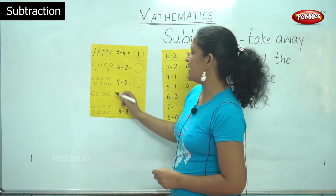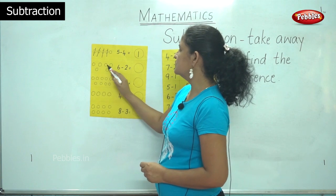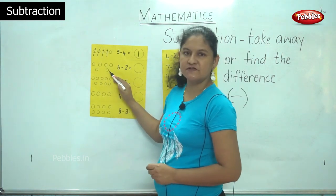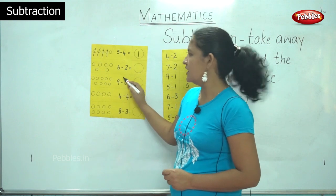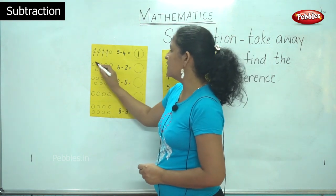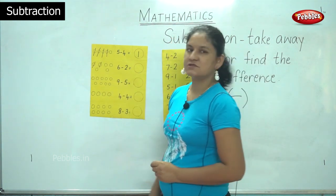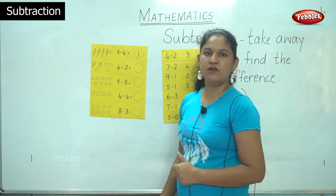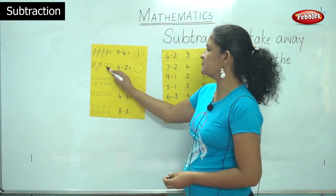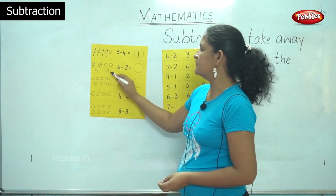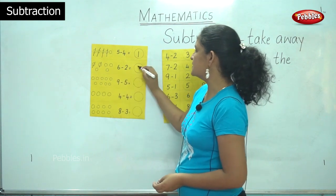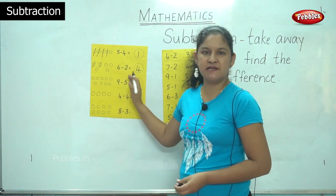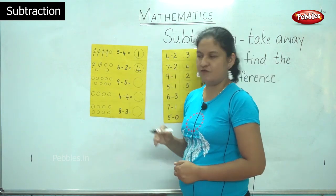In the next picture I have 1, 2, 3, 4, 5, 6. I have 6 balls and I have to take away 2. So I am taking away 1, 2. If I count the remaining number of balls I will come to the answer: 1, 2, 3, 4. So the answer is 4. 6 minus 2, or 6 take away 2, the answer is 4.